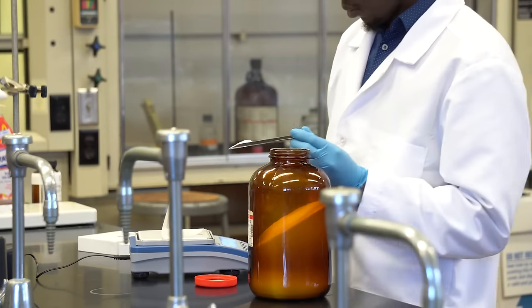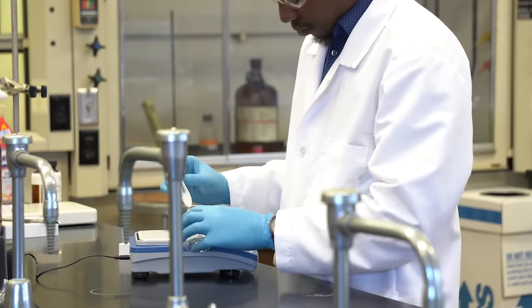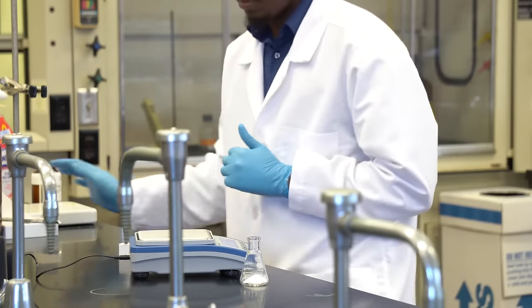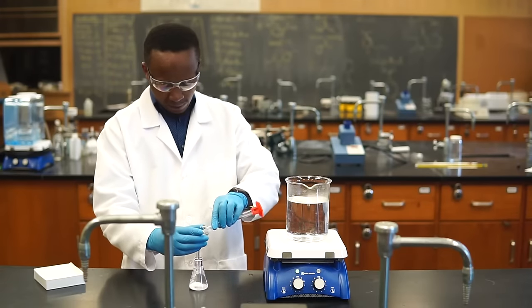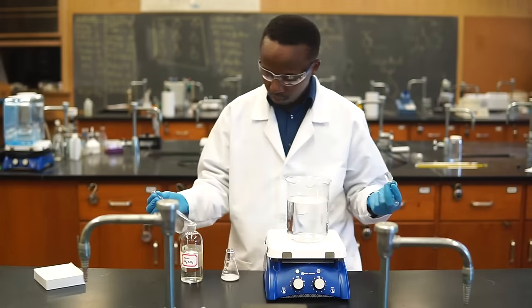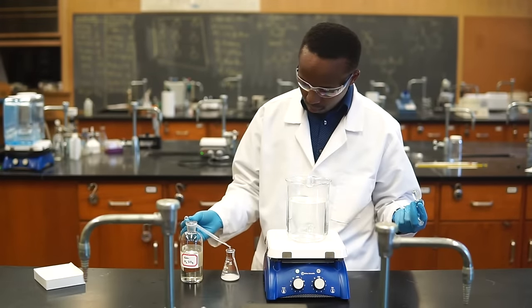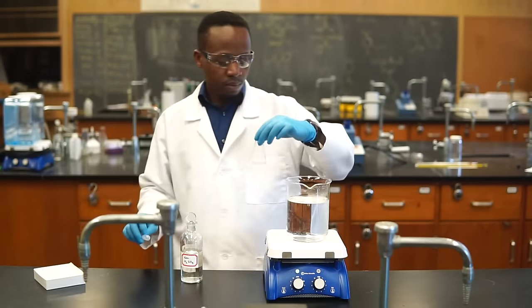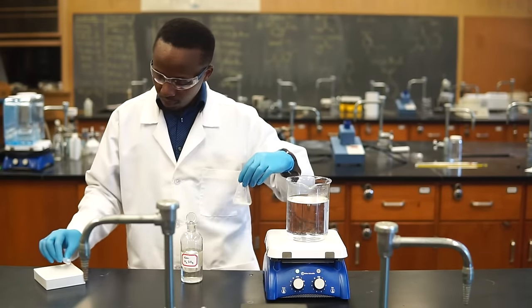We'll put about 2 grams of salicylic acid in a 125ml Erlenmeyer flask, making sure to record the precise mass on our datasheet. Let's add 5ml of acetic anhydride to the powder. Let's also add 5 drops of concentrated sulfuric acid. Swirl the mixture to make sure that everything is well mixed.